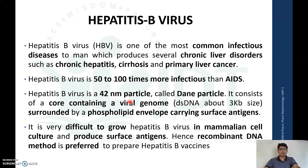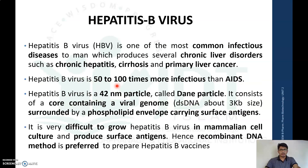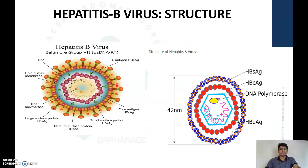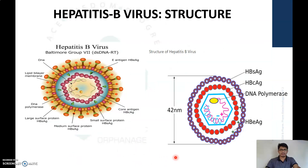The virus consists of a core containing viral double-stranded DNA, surrounded by a phospholipid envelope carrying specific antigens. It is very difficult to grow the hepatitis B virus in mammalian cell culture and produce the surface antigen, therefore recombinant DNA technology is the preferred method to prepare hepatitis B vaccines.